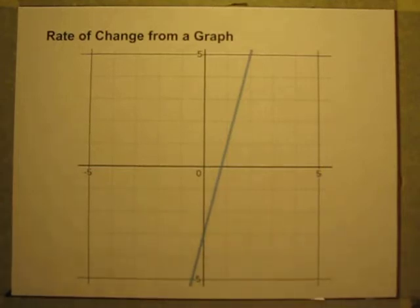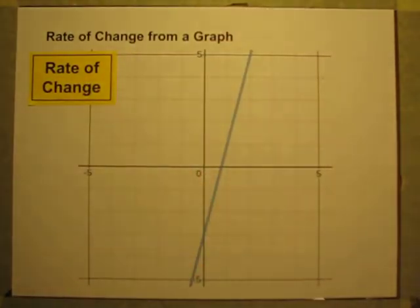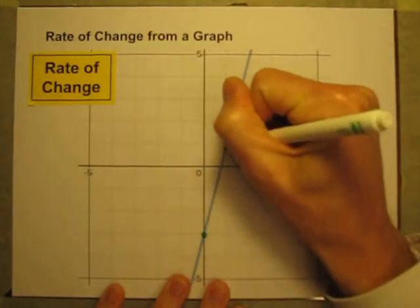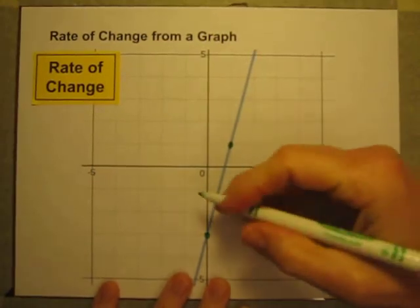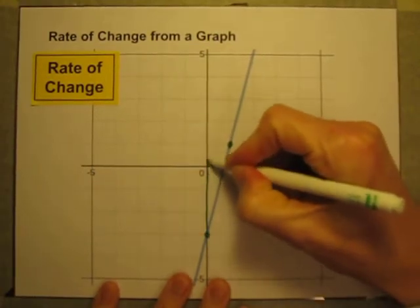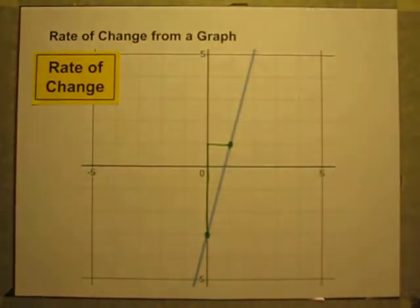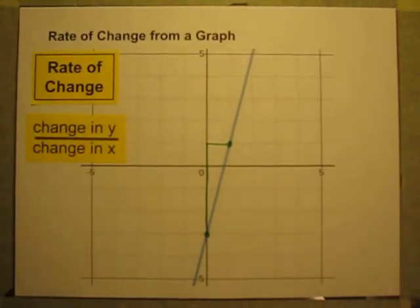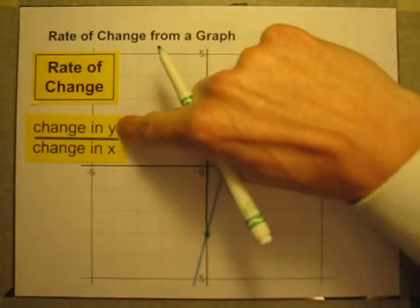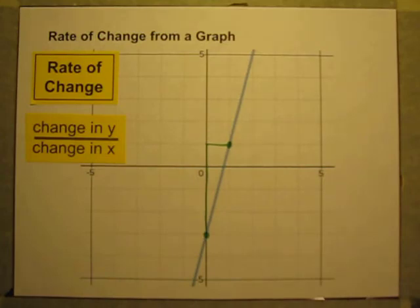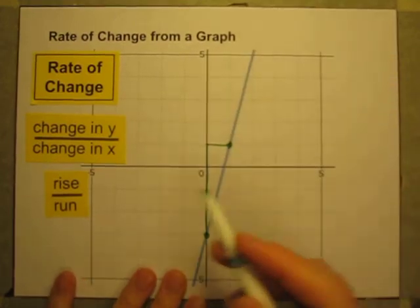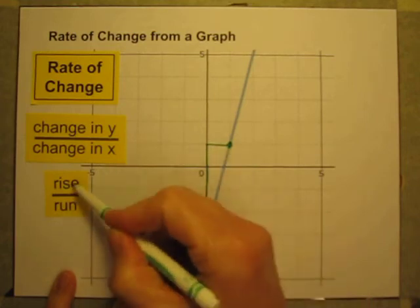I can still describe the rate of change. I can still pick two points on the line, and instead of doing miles divided by hours, I can still say how much does the line go up and how much does the line go over. I'm calculating, more generally, the change in y values divided by the change in x values. A lot of times we describe that as rise over run — the change in y values is how much you're going up and down, the change in x values is how much you're going side to side.